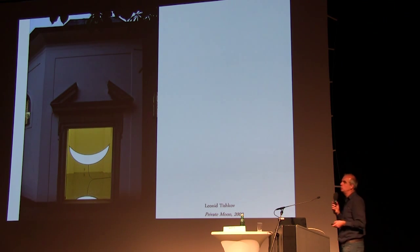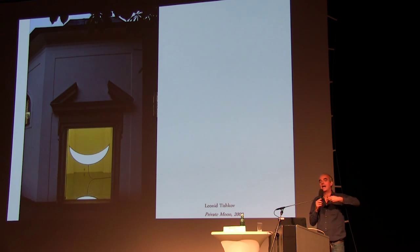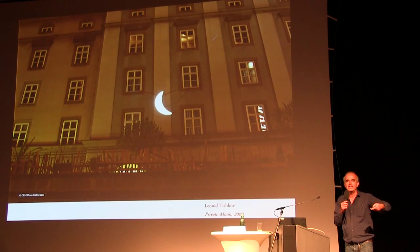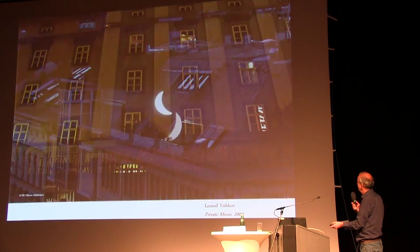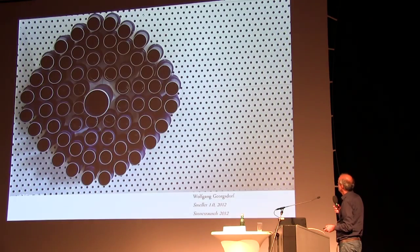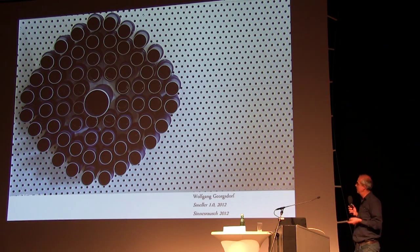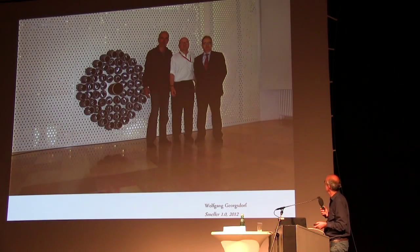There was also a very nice project by Russian artist Leonid Tishkov — a moon you could borrow. The chapel on the red square was the home base of the moon, and people could come to us and say 'I would like to borrow the moon for two days.' The only condition was that they had to mount the moon somewhere everyone could see it — outside or inside a window. So it was a sculpture moving through Linz. Another approach is the invisible sculpture — a beautiful work by Wolfgang Georgsdorf, an artist originally from Linz now living in Berlin. He built a smeller — he does smell projects all his life. You could smell it but only see the tubes.